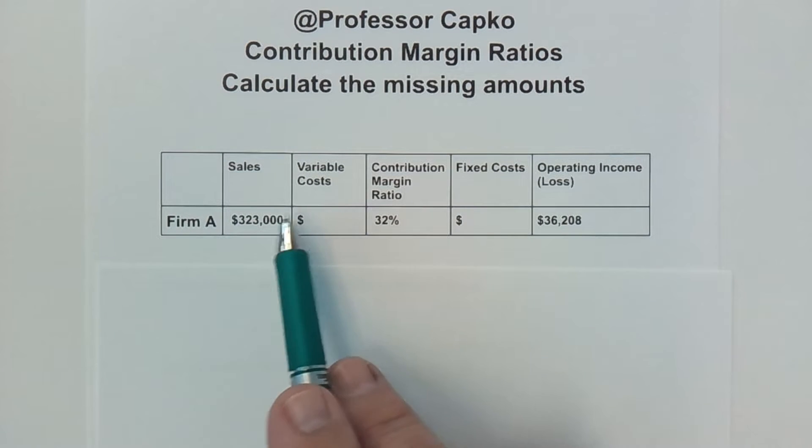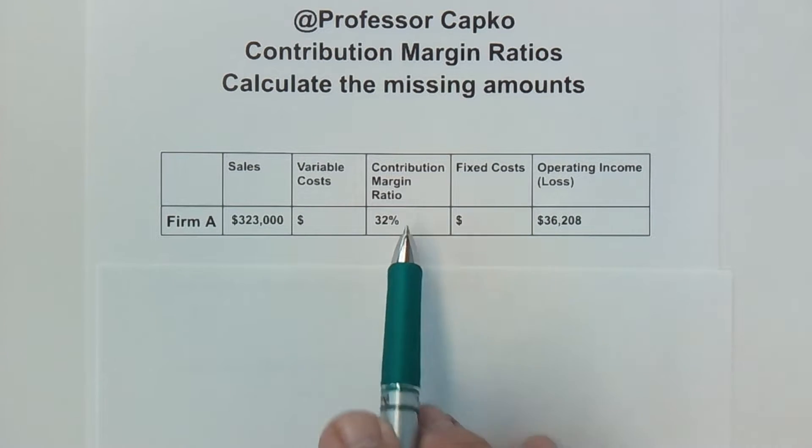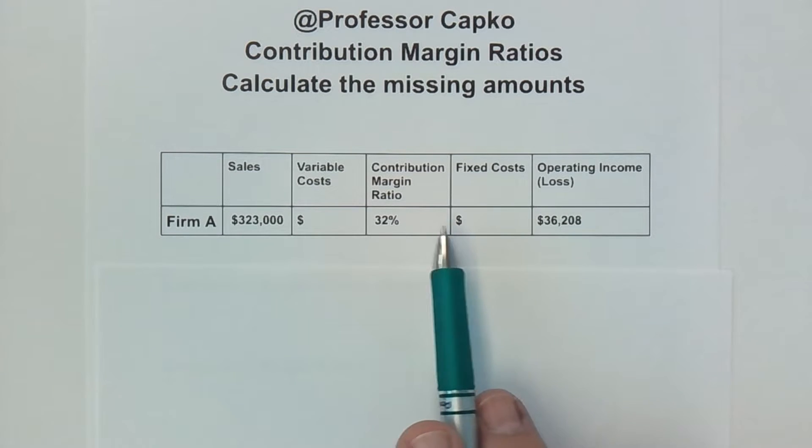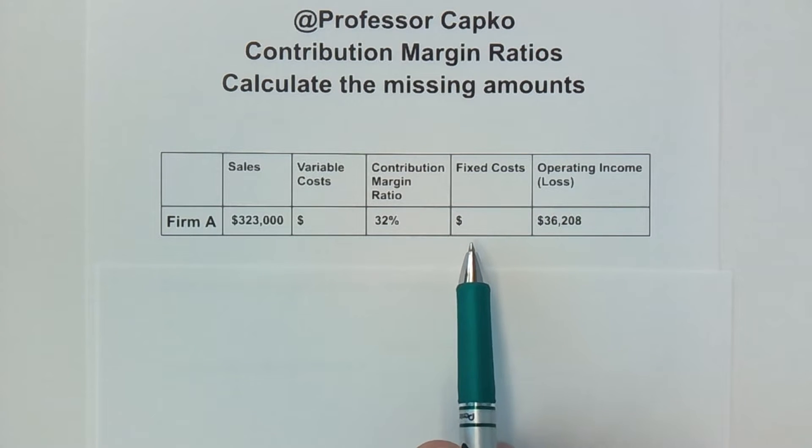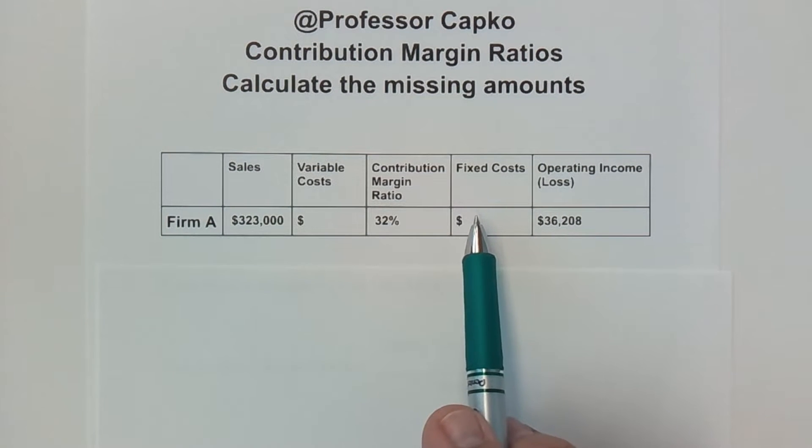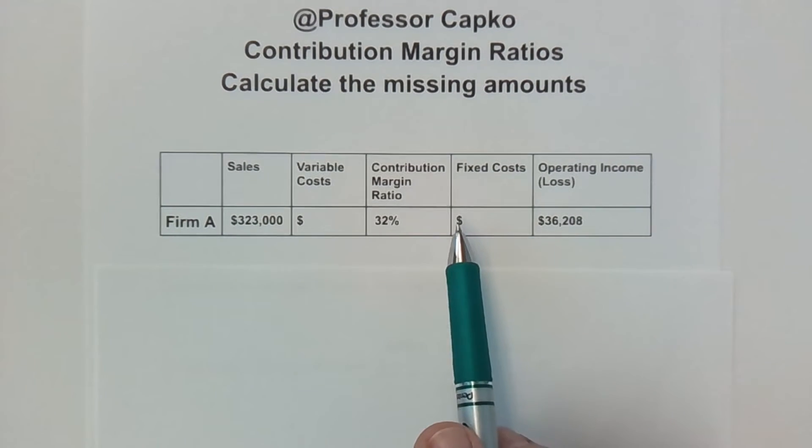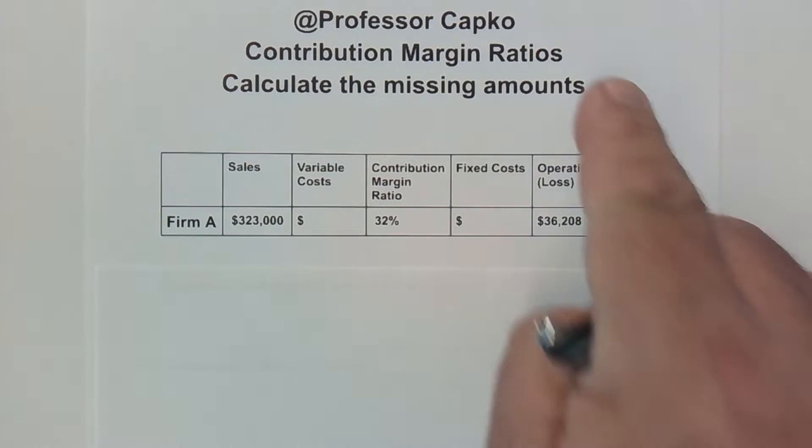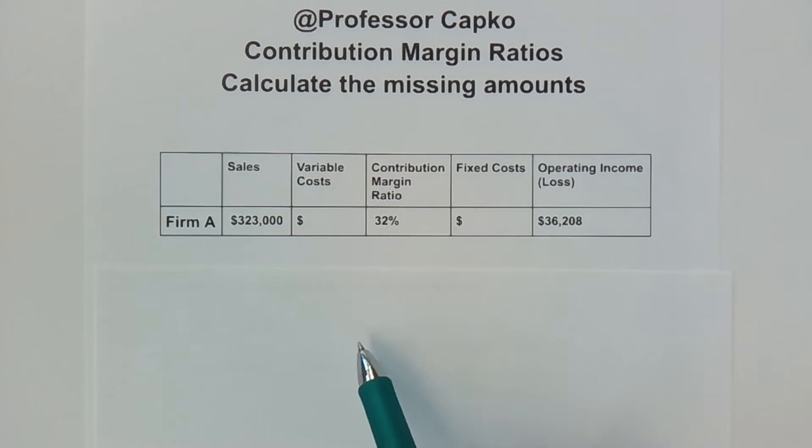In this example here, we've got a firm with a sales figure, a contribution margin ratio, and an operating income amount. But we don't know the variable costs and we don't know the fixed costs. I did a prior video in which I did several firms such as this in various ways. If you missed that video, I'm going to link it up here. But I'm going to now break it down to show you precisely what to do in a step-by-step fashion. That way, there's no question that you will wind up knowing exactly how to do that after you watch this video.